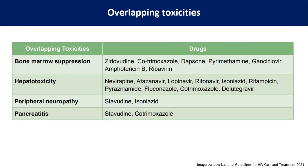There are certain overlapping toxicities. Bone marrow suppression can be caused by zidovudine, cotrimoxazole, dapsone, pyrimethamine, ganciclovir, amphotericin B, ribavirin, and other chemotherapies for cancers. We should not bluntly say it is due to ART. Hepatotoxicity can be produced by nevirapine, atazanavir, lopinavir, ritonavir, isoniazid, rifampicin, pyrazinamide, fluconazole, cotrimoxazole, and dolutegravir. Peripheral neuropathy is possible with stavudine and isoniazid. Pancreatitis with cotrimoxazole as well.